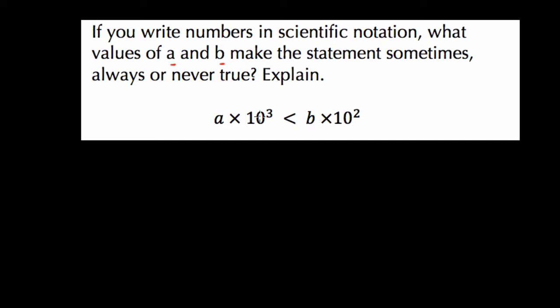So in this, we notice that we have 10 to the third here, that's 1,000, right? And A is some number times 1,000. And here we have B times 10 squared, which is 100. So if you think about it, we're saying that A times 1,000 has to be less than B times 100. Now, with scientific notation, with positive numbers, this will never happen.